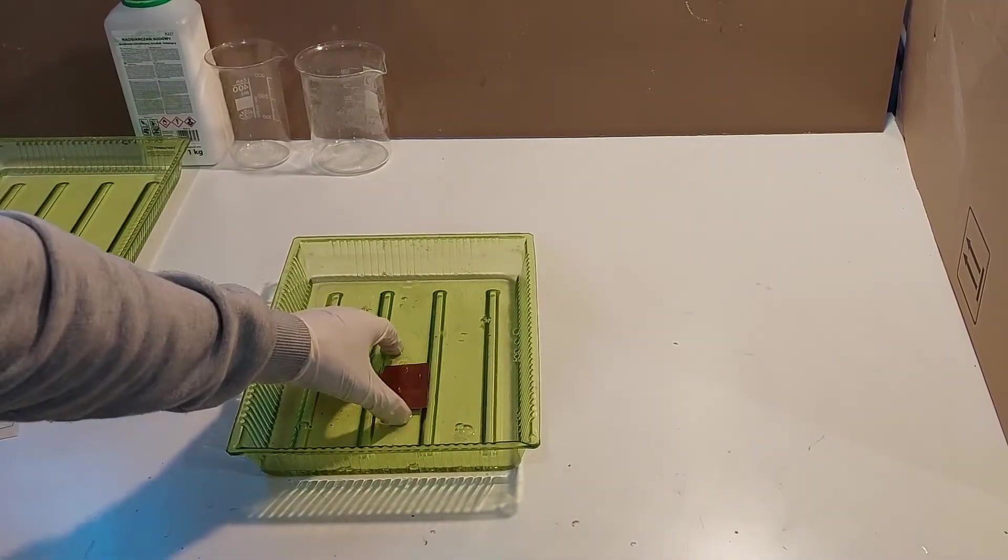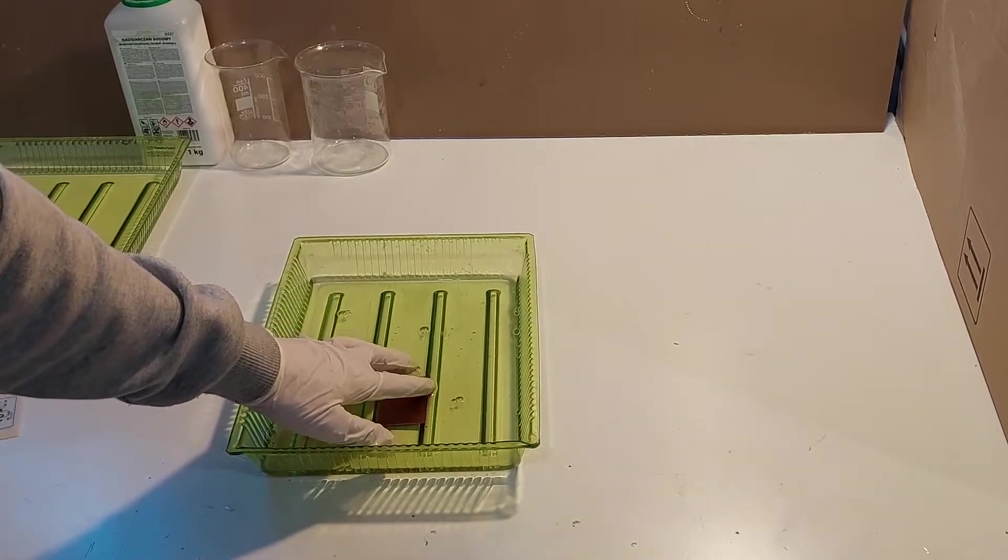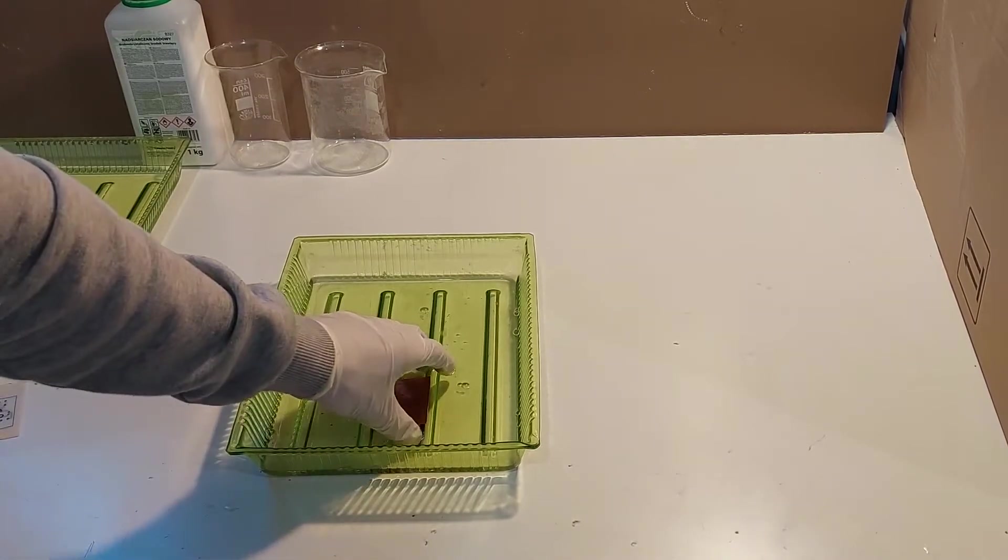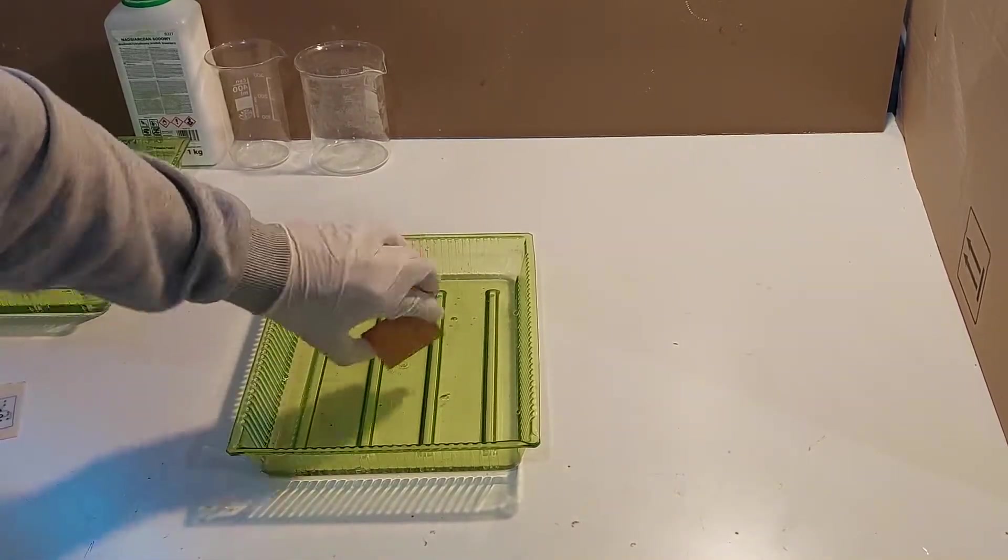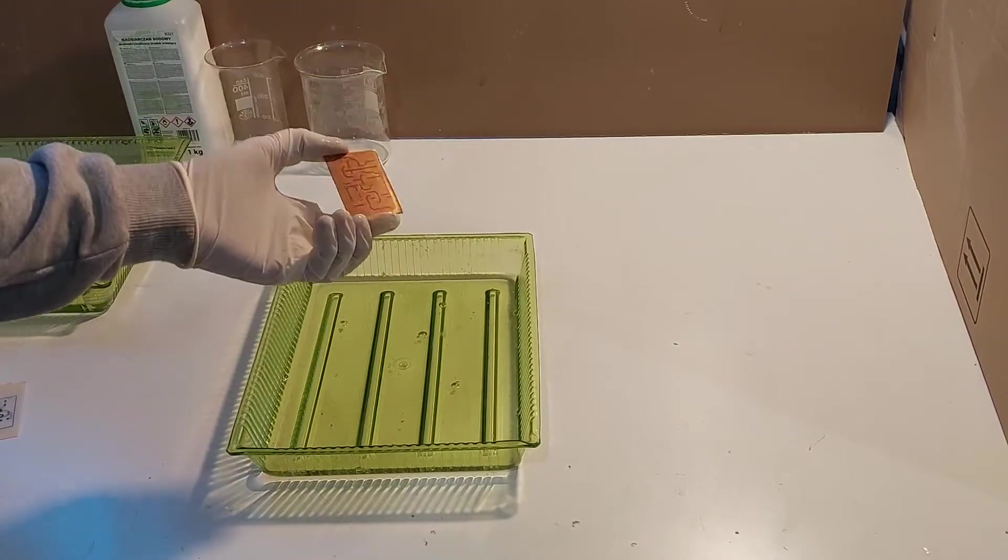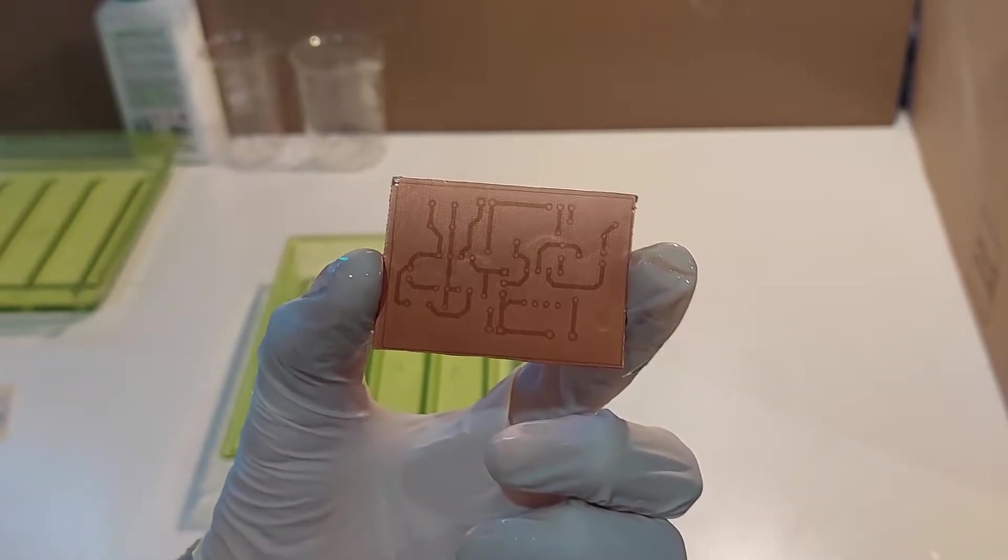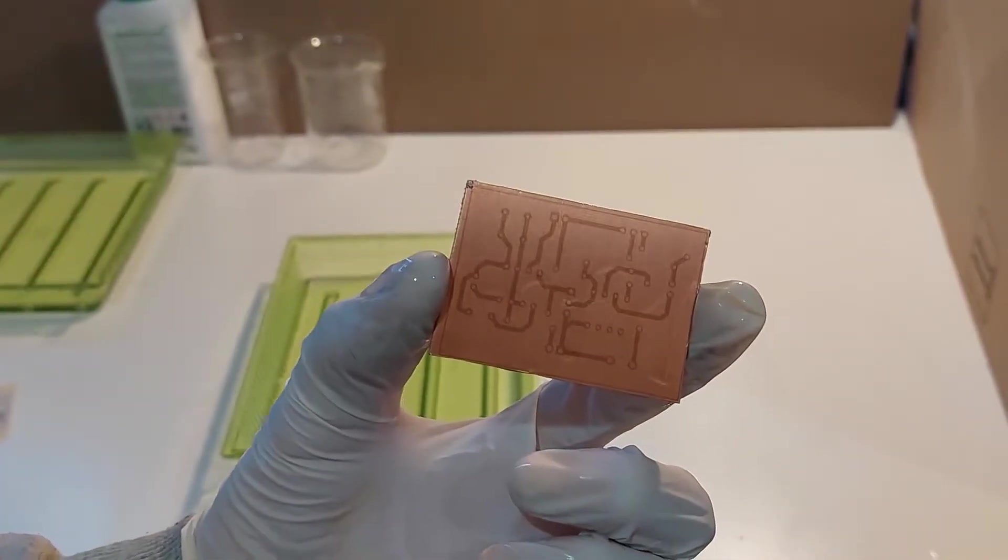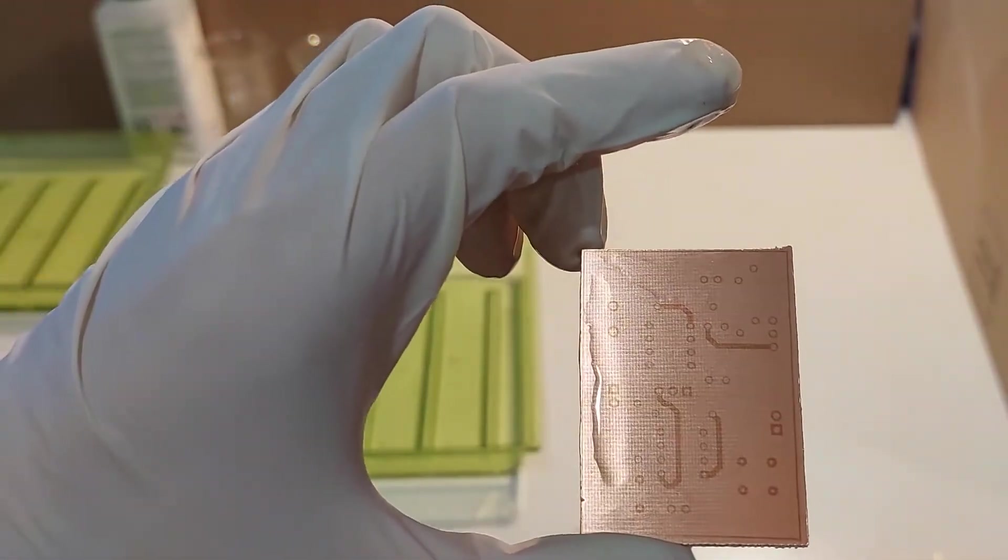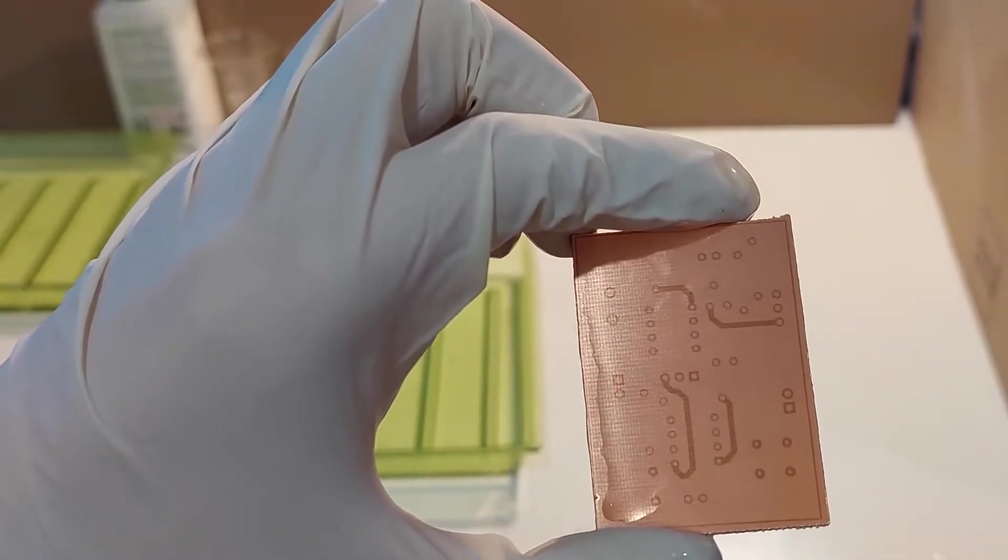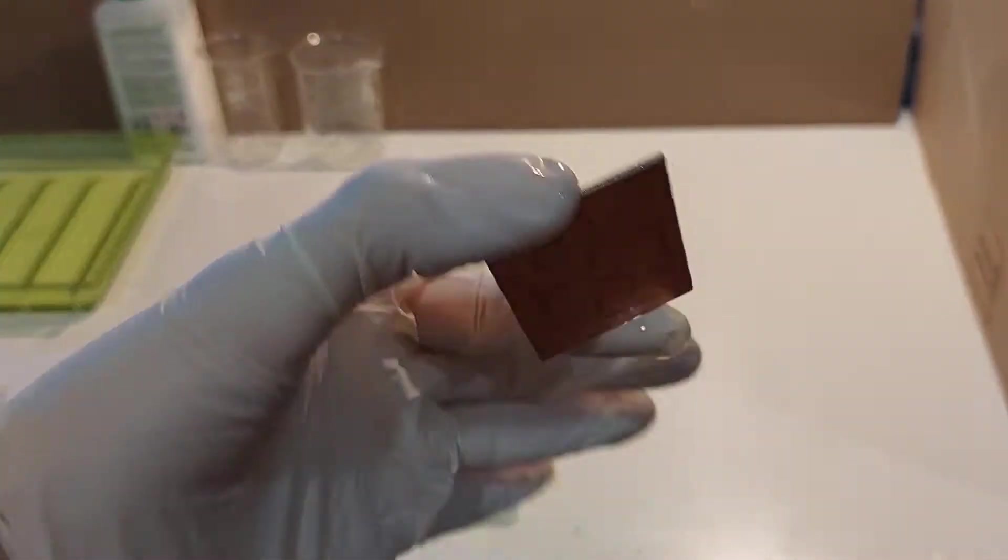You can rock it around so it develops faster. When developing, make sure you get off all the unnecessary photoresist. But don't scratch it. You can lightly with your finger go over to clean it off, but don't do it too hard. Otherwise it's going to damage the part you want to keep. So I think it's good. It's been about two minutes. This is the board. It has the photoresist still on the plates that weren't exposed. And the photoresist is going to protect the copper when we're etching. So those places are just going to be left with copper and everything else is going to be without it.